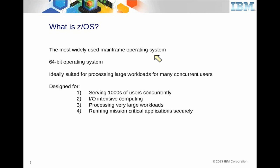ZOS is a 64-bit operating system — that's one of its key features, compared to OS/390 which was a 31-bit operating system. ZOS is definitely ideally suited for processing large workloads of many concurrent users — serving tens of thousands of concurrent users with IO-intensive computing, running mission-critical applications securely.